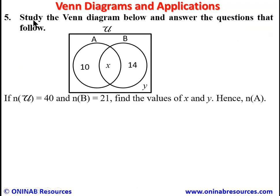Problem five: Study the Venn diagram. The universal set has four regions: A only = 10, A ∩ B = X, B only = 14, and neither A nor B = Y. Given that n(U) = 40 and n(B) = 21, find the values of X and Y, and hence n(A). Since n(B) = 21, we add everything within circle B to get X.